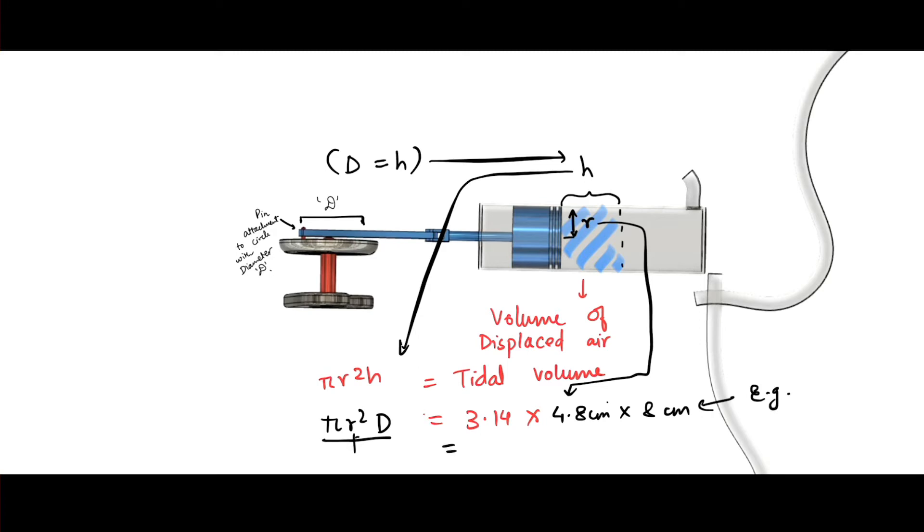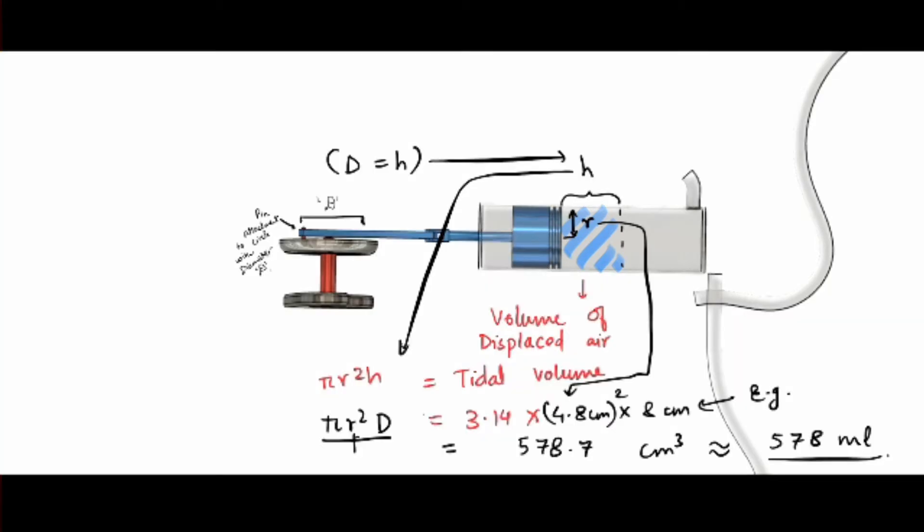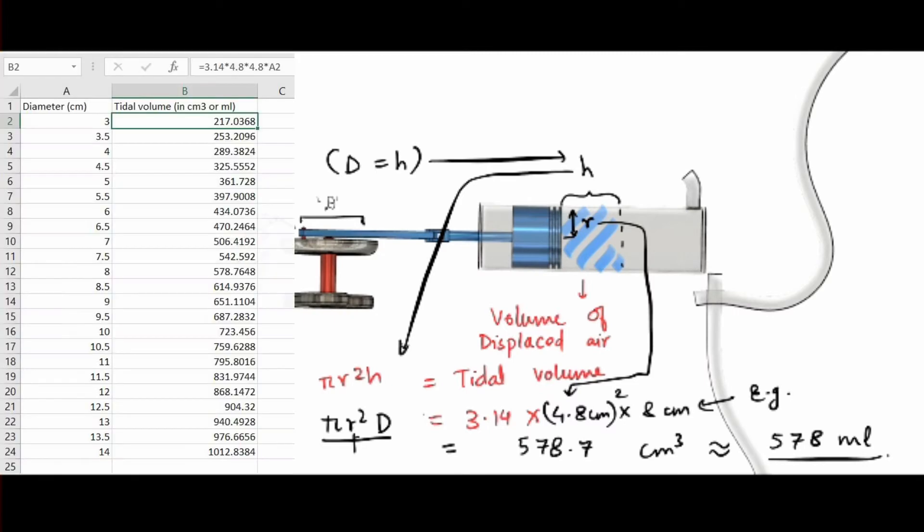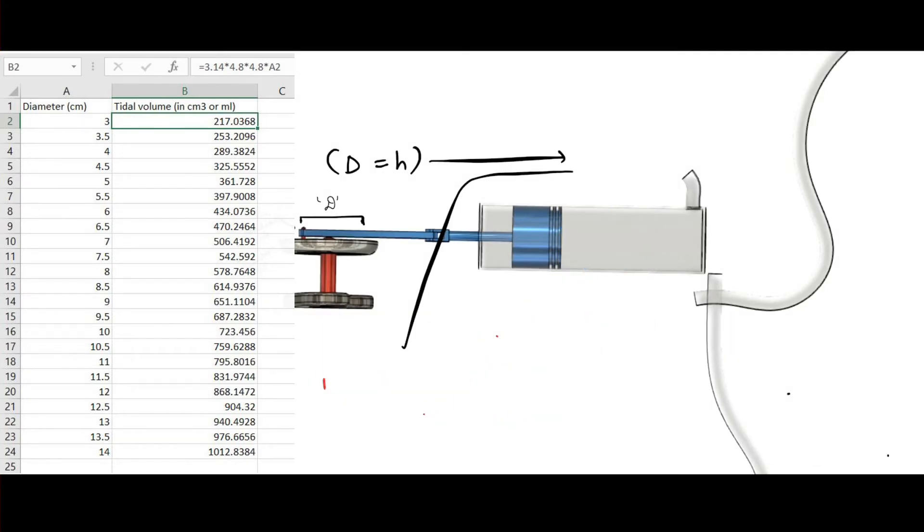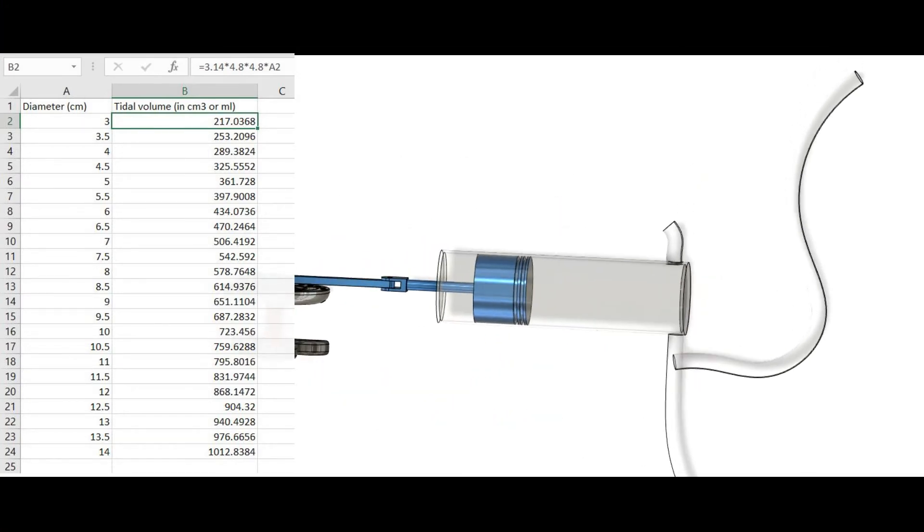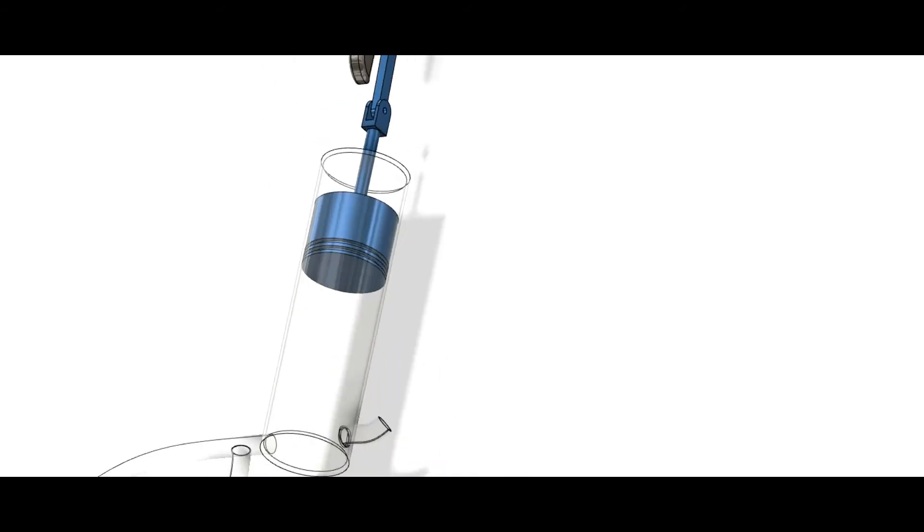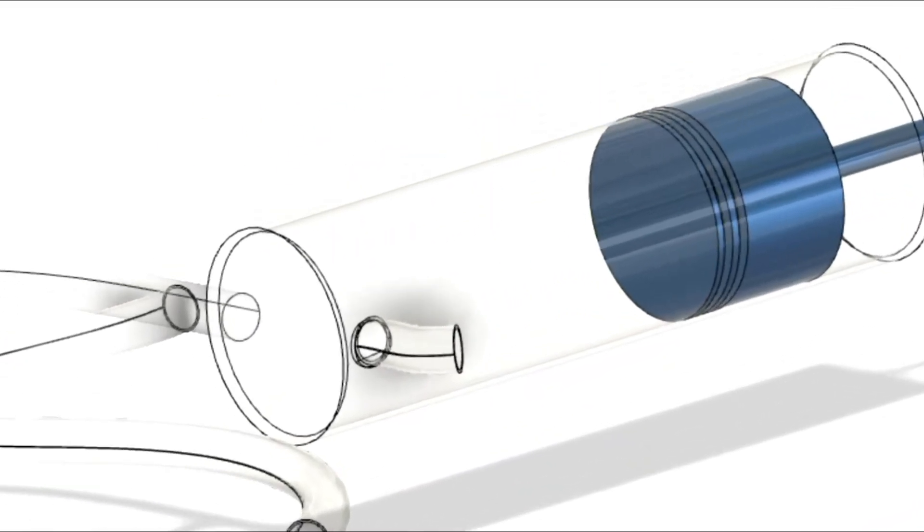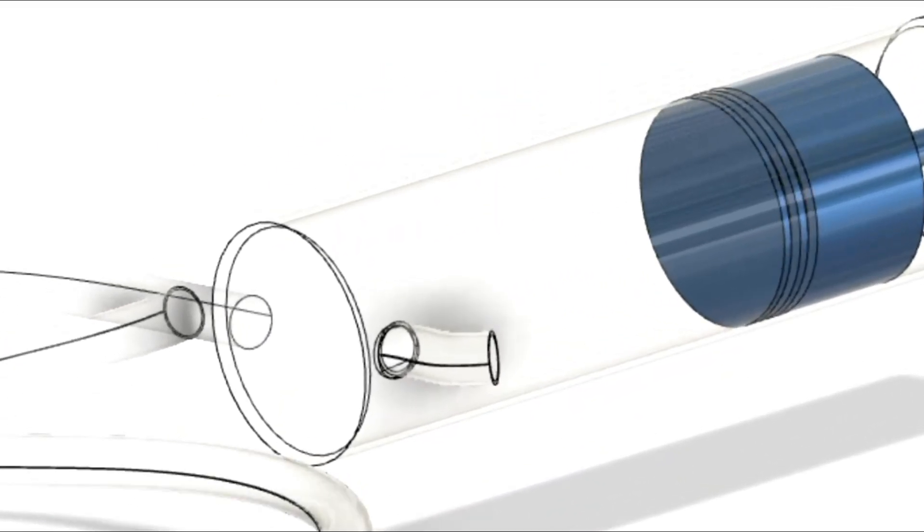For example, if the pin is placed at the 8 centimeter hole, then the displacement of air would be pi r squared h. The value of pi is 3.14, r will be 4.8, and h will be 8. If we calculate it, it will be coming around 578 centimeter cubed, which will be equal to 578 ml of air. The table on the right side shows the tidal volume estimation for each hole placed on the wheel so that tidal volume can be adjusted depending on the patient's age, weight, and disease condition.